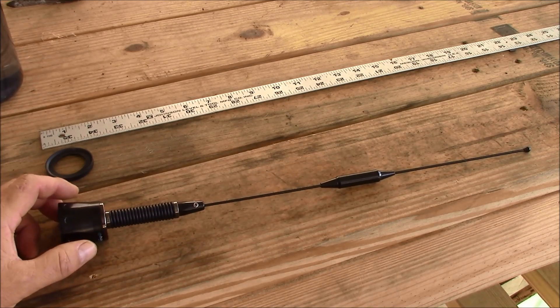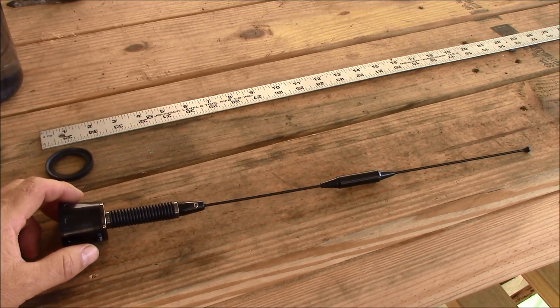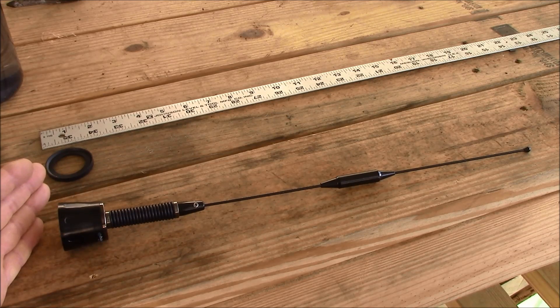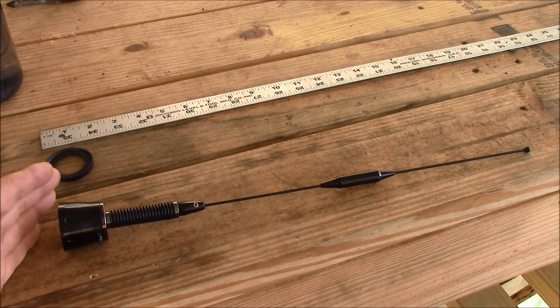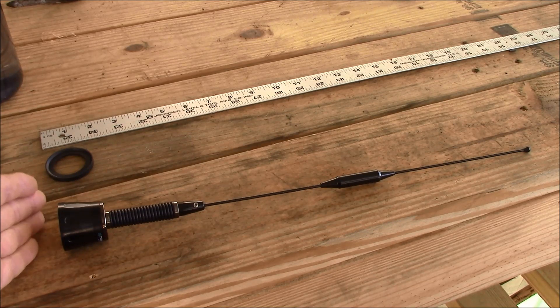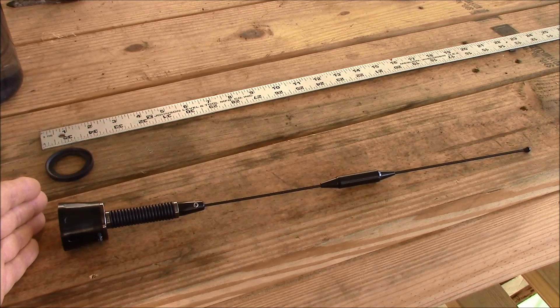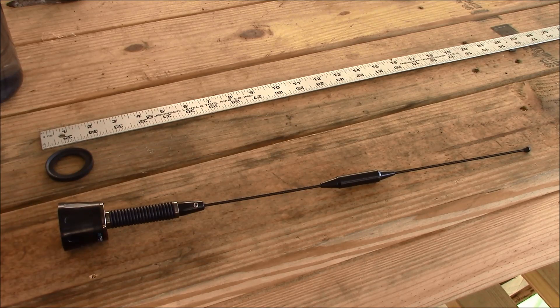So we're going to take our antenna and place it on a vehicle with a standard NMO mount, and we're going to test, with test equipment, the performance characteristics of the antenna versus the data in the technical data sheet, with specific focus on the 2-meter and 70-centimeter amateur bands.